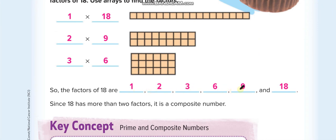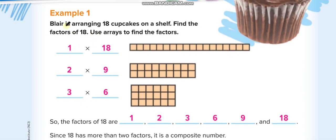The factors of 18 are 1, 2, 3, 6, 9, and 18. What they're asking is: into how many ways can you arrange 18 cupcakes on a shelf? You can make one row of 18, two rows of 9, or three rows of 6 cupcakes. This is the real-life use of factor pairs.